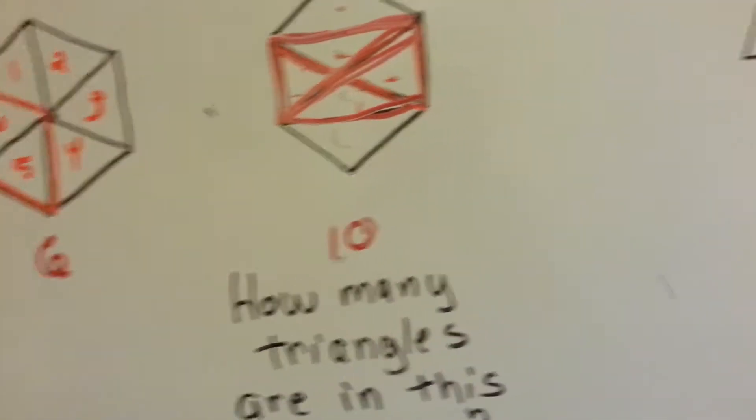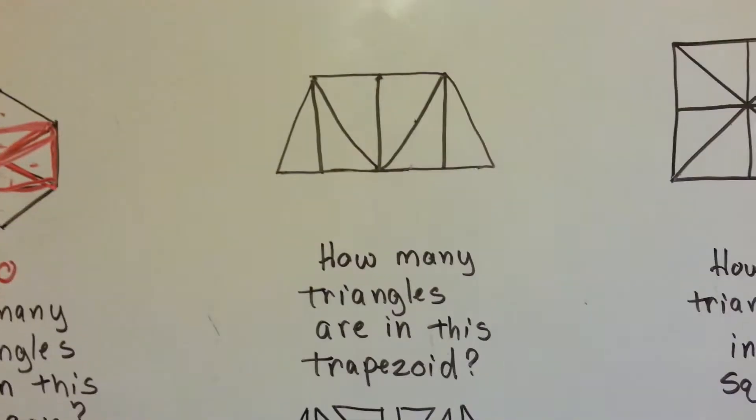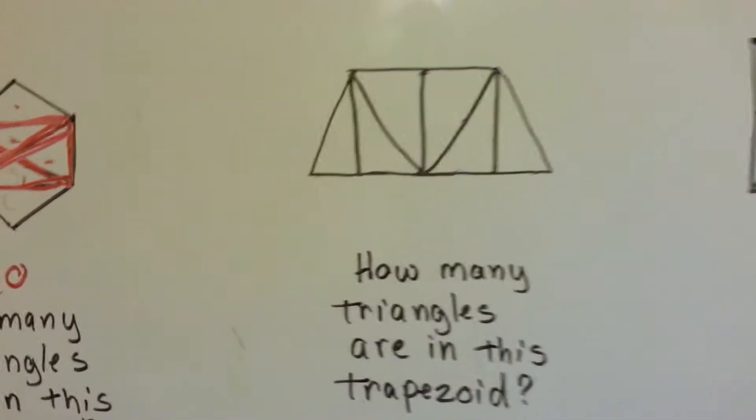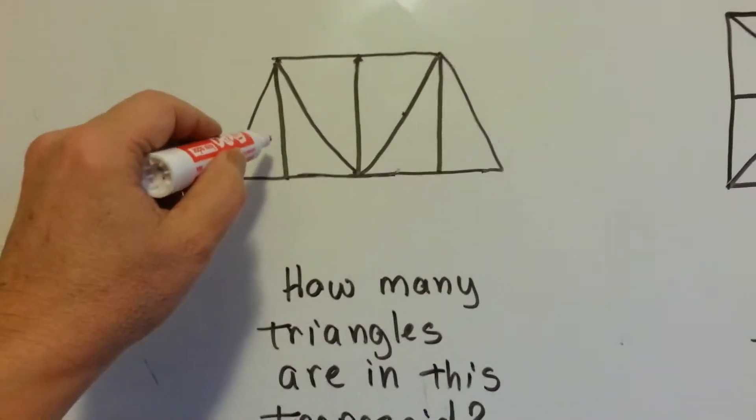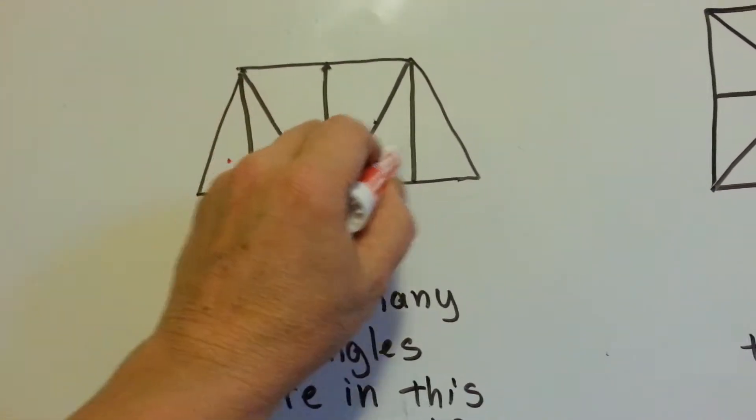This one's got six, all right? Now, how many triangles are in this trapezoid? We can see the obvious ones, one, two, three, four, five, six.